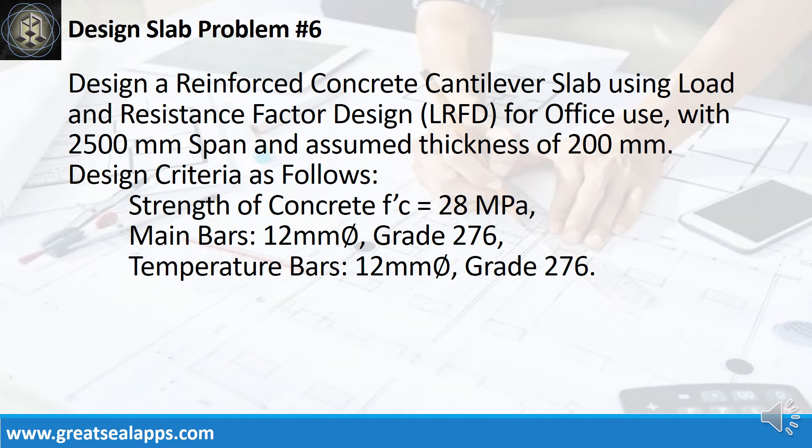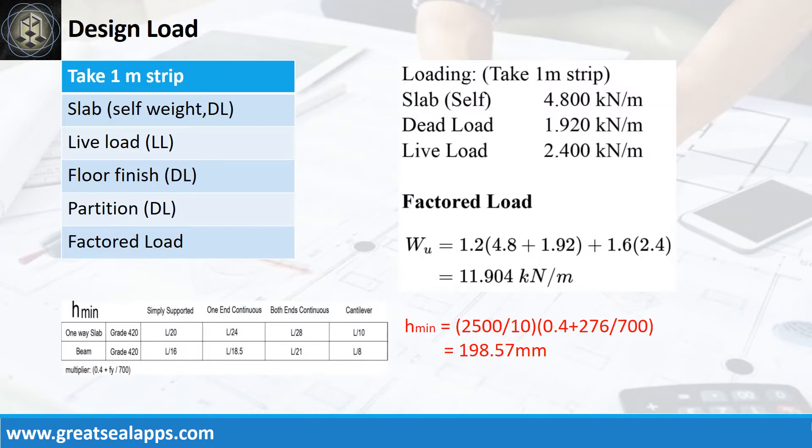Temperature Bars 12 mm Bar Grade 276. The uniform load for 200 mm thick slab is 4.8 kN per meter. An office live load is 2.4 kN per meter. Other dead load like floor finish and partition is 1.92 kN per meter for a factored load of 11.904 kN per meter.